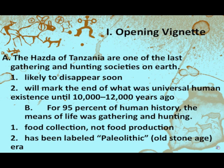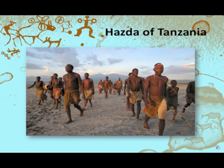The Hazda of Tanzania are one of the last gathering and hunting societies on Earth and will likely be disappearing very soon. For most of our history — about 95% of it — food collection, not food production, was the norm. Please understand the difference between what occurs in Chapter 1 versus Chapter 2. This is food collection: hunting and gathering. The Paleolithic, or Old Stone Age, as just mentioned.